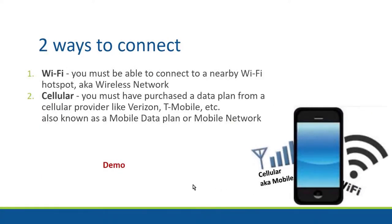There are two ways to make this connection. One is using Wi-Fi — you must be able to connect to a nearby Wi-Fi hotspot, also known as a wireless network. Or you can use a cellular connection — to do that, you must have purchased a data plan from a cellular provider like Verizon or T-Mobile. This is also known as a mobile data plan or mobile network.